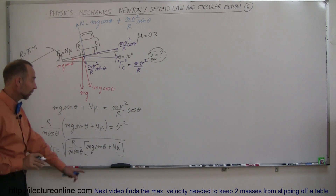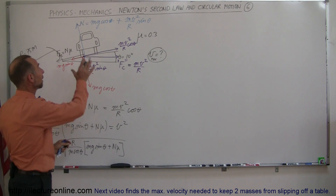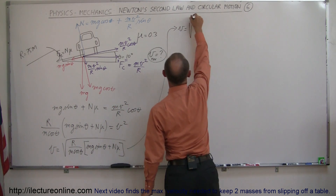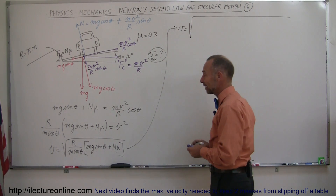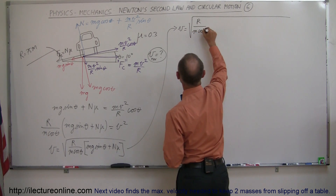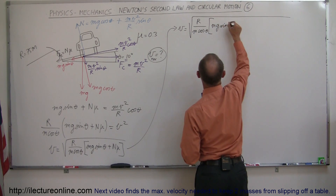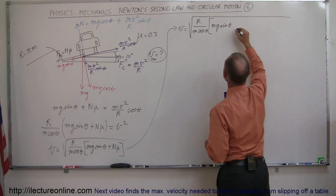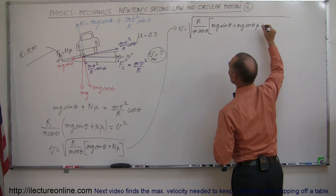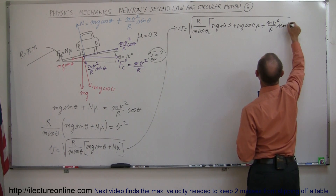We're not done yet — the normal force actually equals mg cosine theta plus mv²/R times sine theta. So replacing N in the equation, we get V equals the square root of R divided by m cosine theta, times mg sine theta, plus mg cosine theta times mu, plus mv²/R times sine theta times mu.